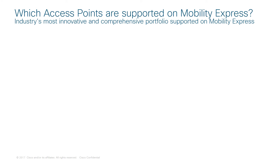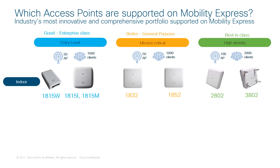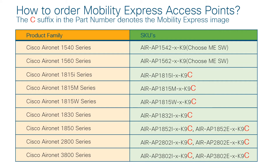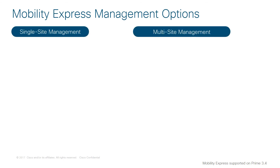What access points support Cisco Mobility Express? Cisco Mobility Express is supported on all Wave 2 series access points, from the Compact Form Factor 1815 series to the Best-in-Class 2838-4800 APs. It is also supported on the Outdoor APs and on the ISR 1100. One key thing to remember when ordering Mobility Express-capable access points: access points with a SKU or part number ending in the letter C come shipped with Mobility Express installed by default. Whether you are deploying Mobility Express in a single site or across many sites, there are multiple options to choose from to help you manage your network effectively.